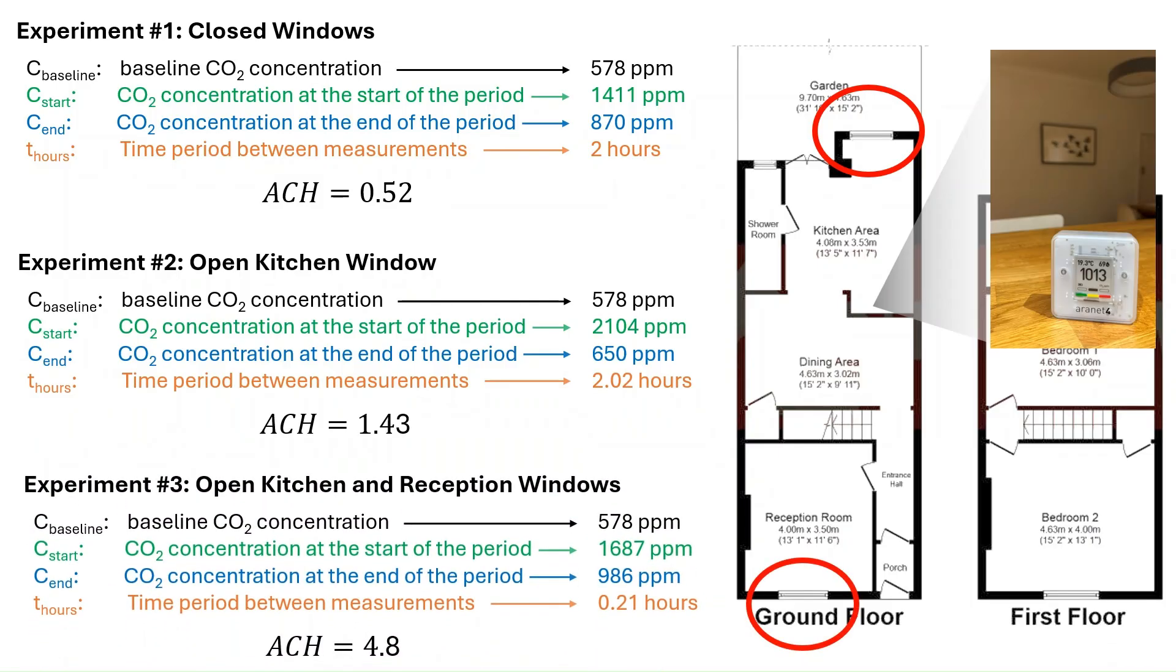Now, when I open both the window in the front of my house and the kitchen window, things get even better, where the ACH increases all the way up to 4.8. You can see how simple changes like this, like the combination of windows to open, will maximize your ACH.